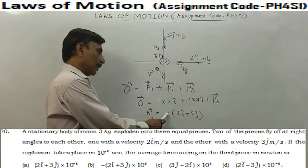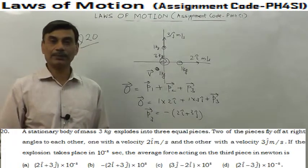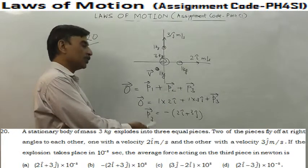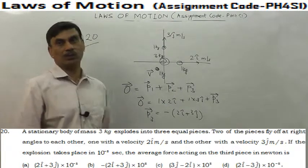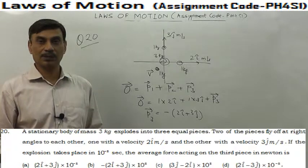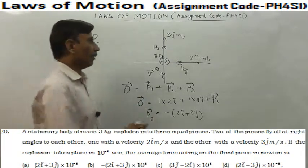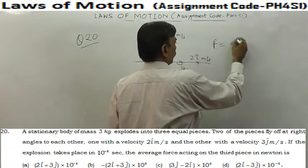Final momentum will be 2i plus 3j cap. Initially momentum was 0, this is final momentum. So whether you call it change of momentum or final momentum, it's the same thing because initial momentum was 0. So this represents change of momentum.